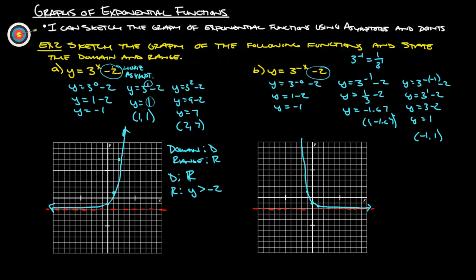This really helped me understand asymptotes better. No matter what we put in for x, we will never get zero out of three to the x — zero will never be an option. So in this function, we will never have zero minus two. That's why negative two is an asymptote: negative two will never be our y-value. And since it's three to some power, whether positive or negative, it will always be positive, so the result is always greater than negative two.